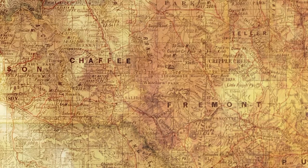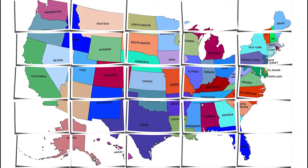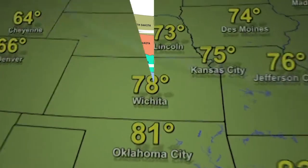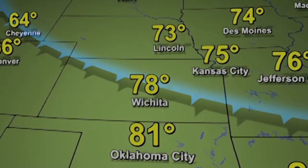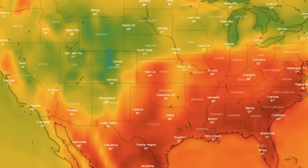A variety of reference maps can be created for almost every country in the world. Thematic maps show the variation of a topic — the theme — across a geographic area. Weather maps showing daily high temperatures are examples of thematic maps. They start with a reference map of the United States, with temperature plotted using colors to communicate the forecast.